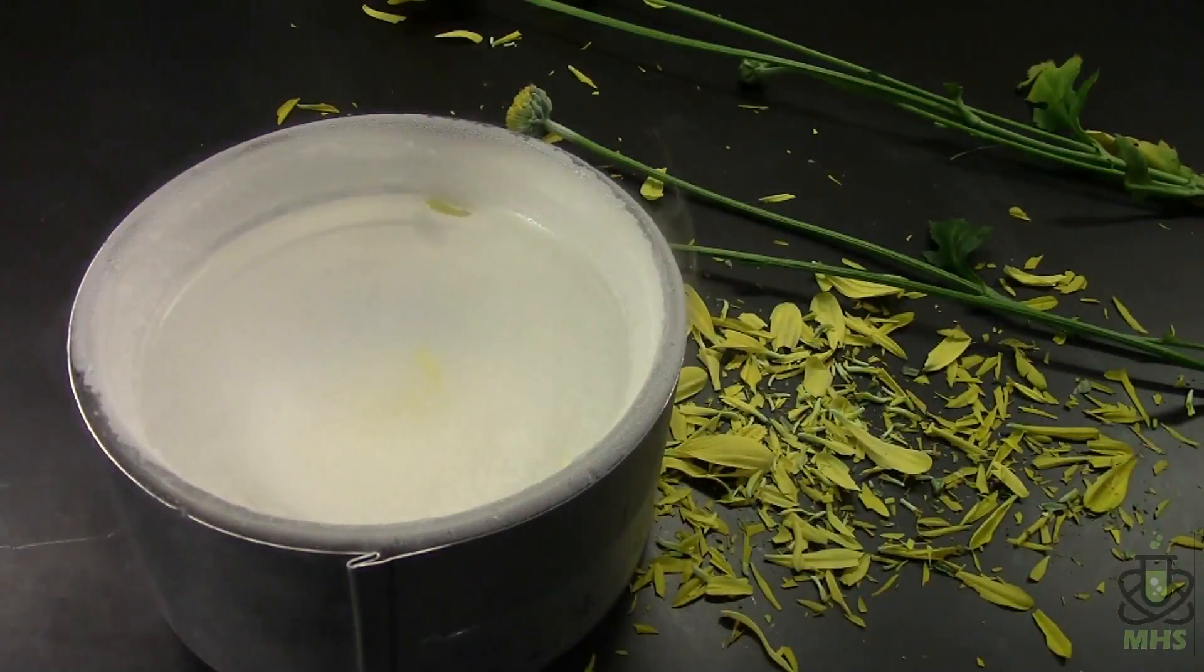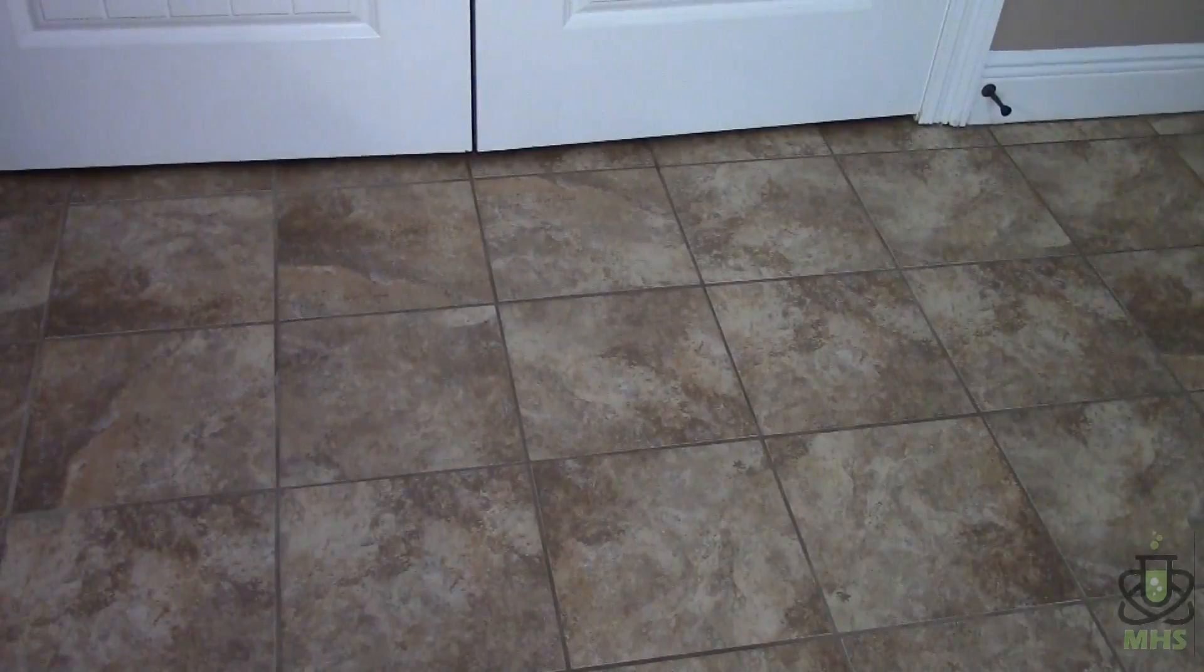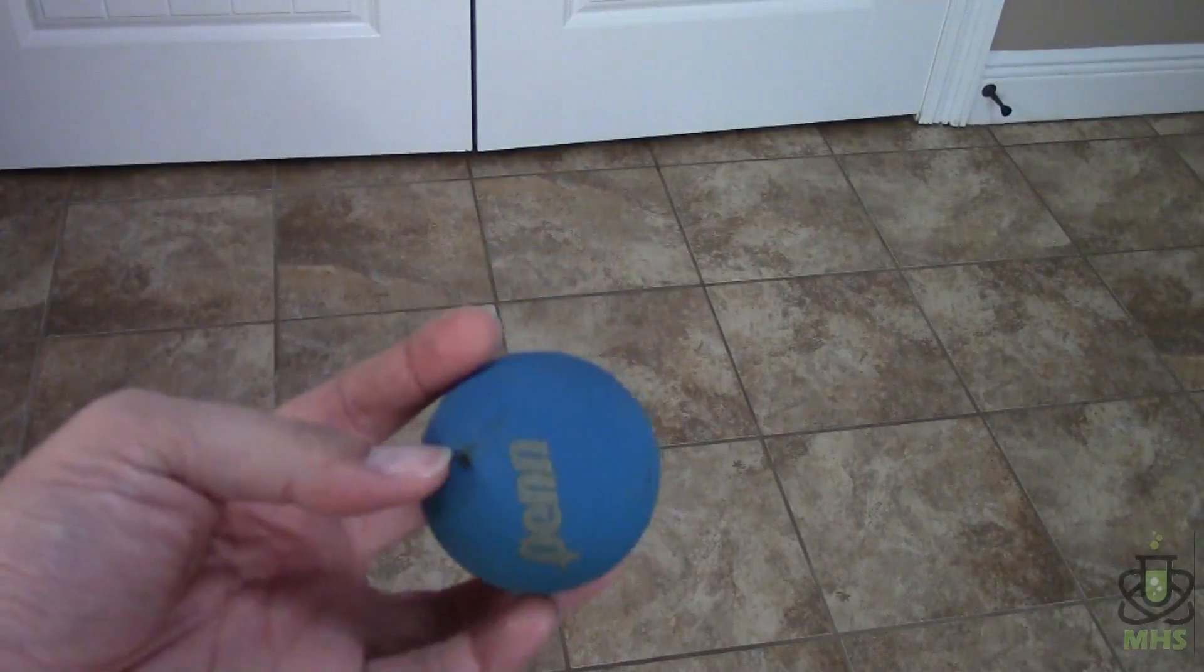Nice. The downside of that one, of course, is that now it's a huge mess. I think the best thing to shatter, though, is one of these. It's a racquetball. So they are very bouncy, as you might know. It's made of some kind of rubber.